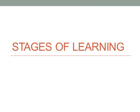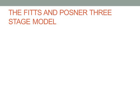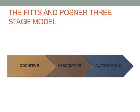Today we're going to cover stages of learning, focusing on one model for progression through learning: Fitts and Posner's three-stage model. There are three parts to it: the cognitive stage, the associative stage, and the autonomous stage.